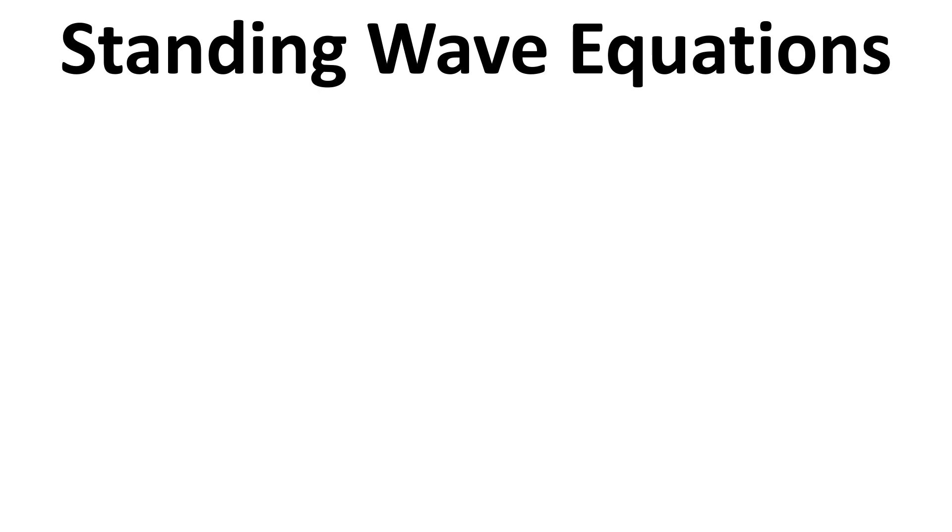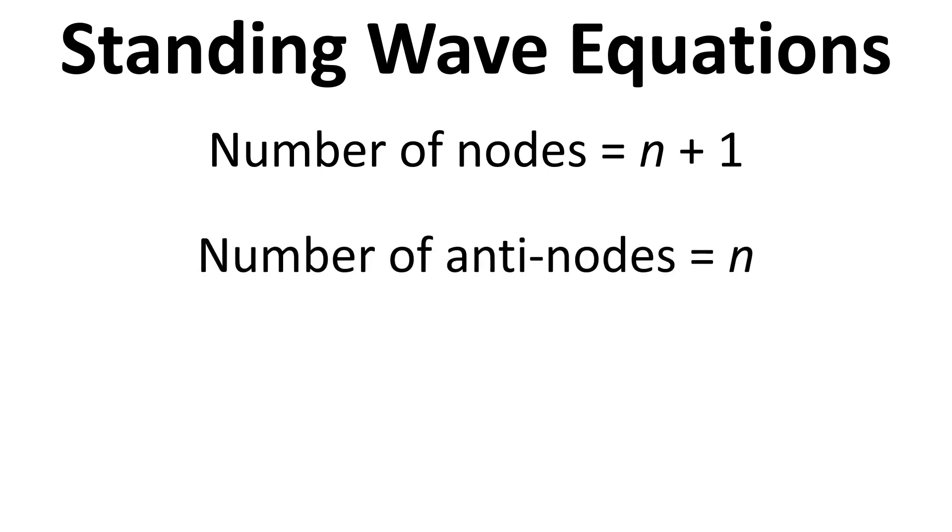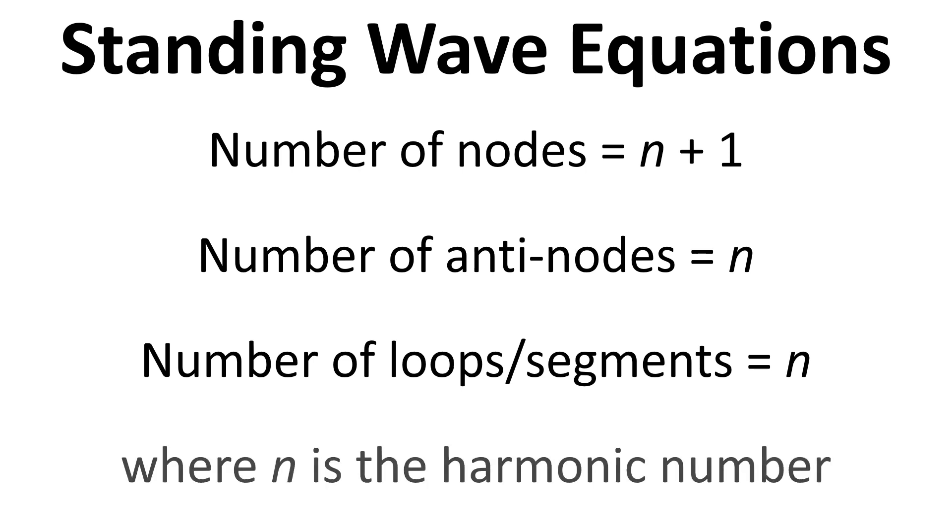Some useful equations that go along with this are that the number of nodes equals n plus 1, the number of antinodes equals n and the number of loops or segments equals n. And this is all where n is the harmonic number.